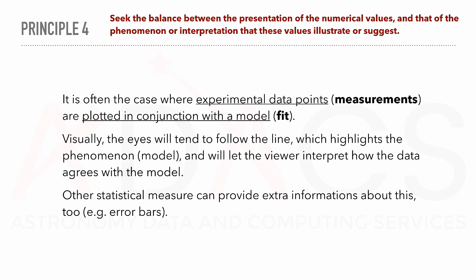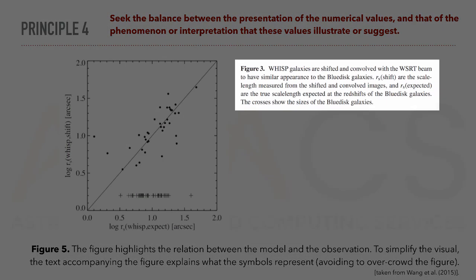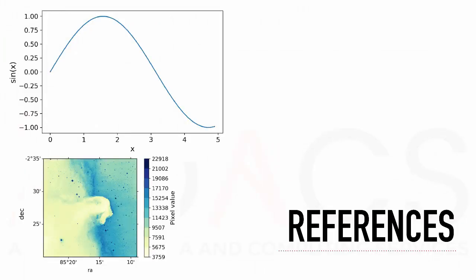Other statistical measurements can provide extra information about this too. For instance, this figure highlights the relation between the model and the observation. To simplify the visual, the text accompanying the figure explains what these symbols represent, avoiding to overcrowd the figure.